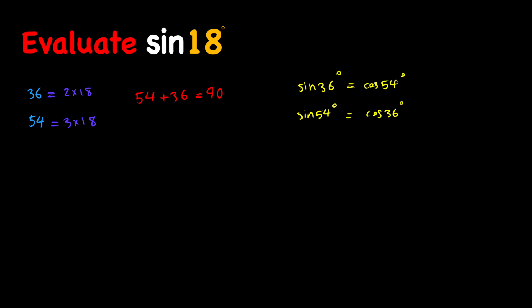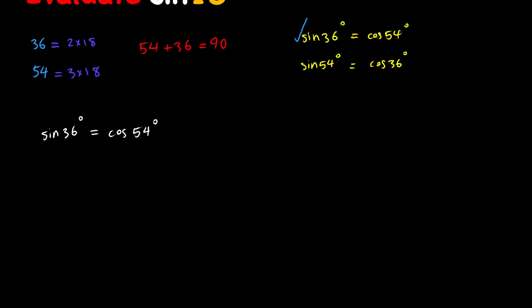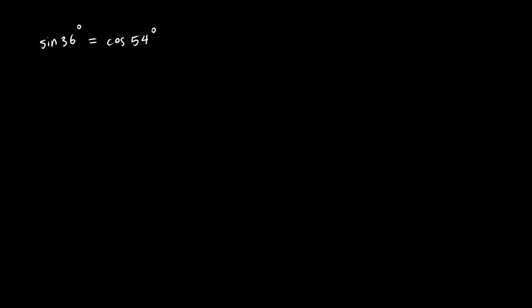At this point, I'm going to use one of these two equations to evaluate sine of 18 degrees, and I'm going to go with the first one: sine of 36 degrees equals cosine of 54 degrees. Now remember that 36 equals two times 18 and 54 equals three times 18, so I have sine of two times 18 equals cosine of three times 18. Note that all angles are in degrees.